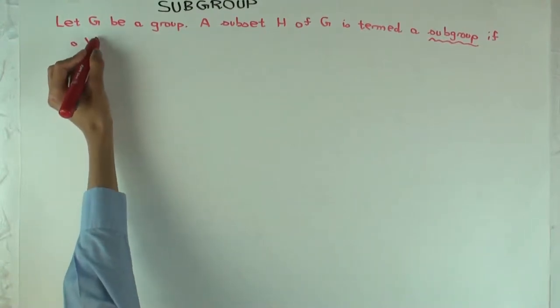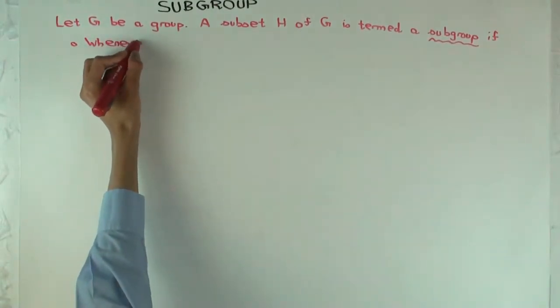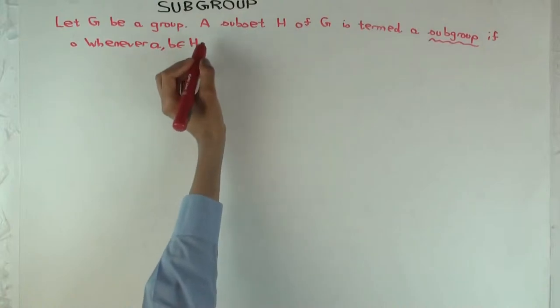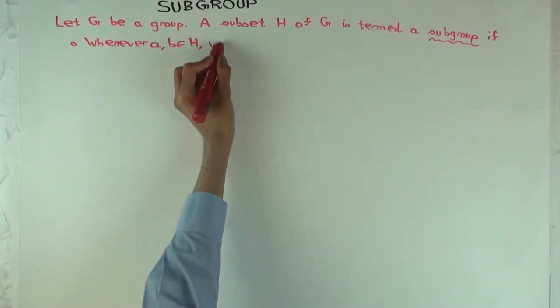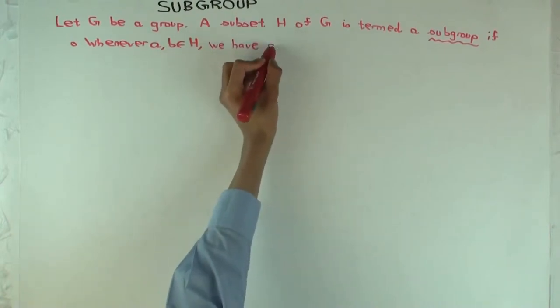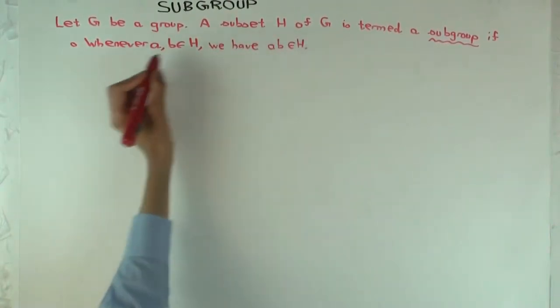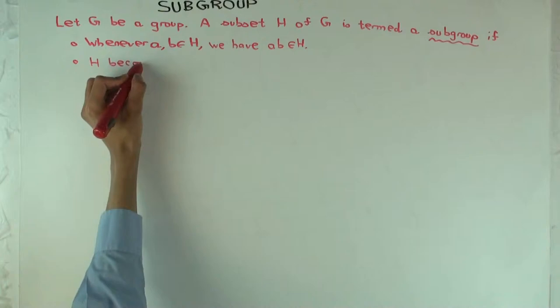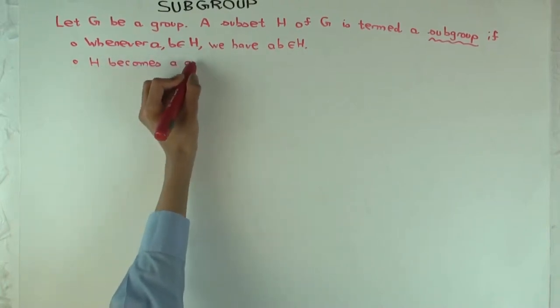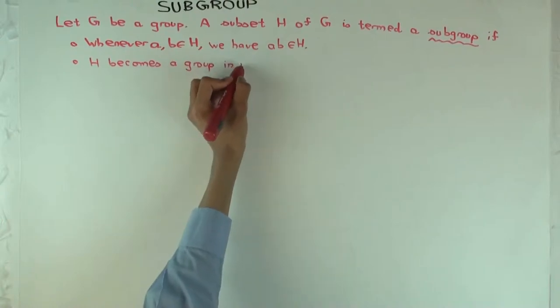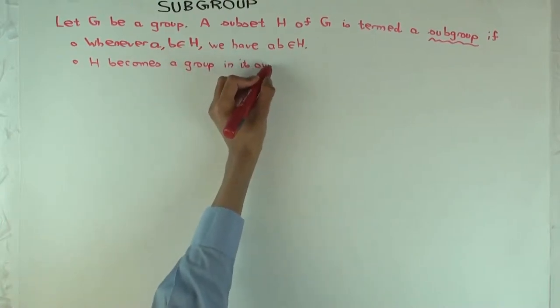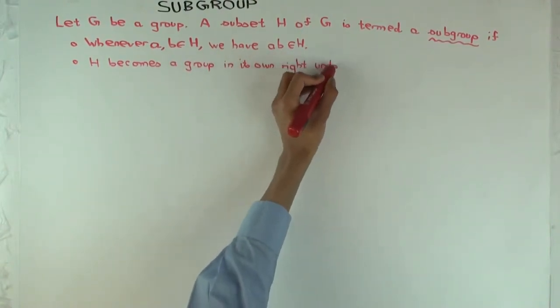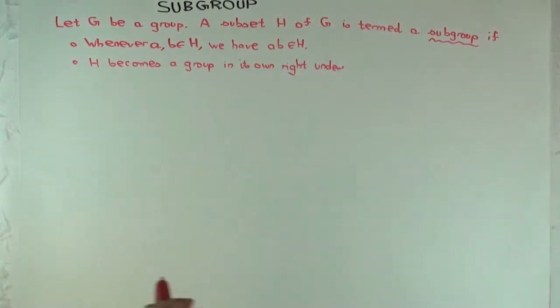The first is, whenever A and B are elements of the subset, which you want to say is the subgroup, we have the product in the subset. And the next thing is, H becomes a group in its own right under the induced operation.